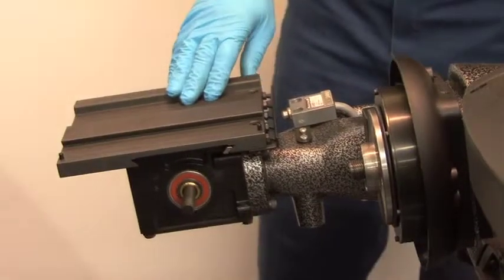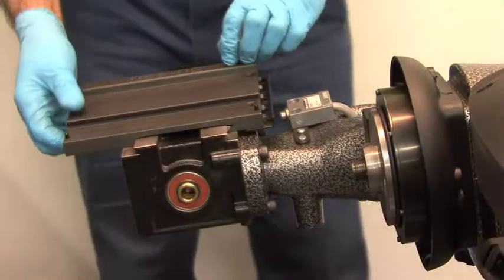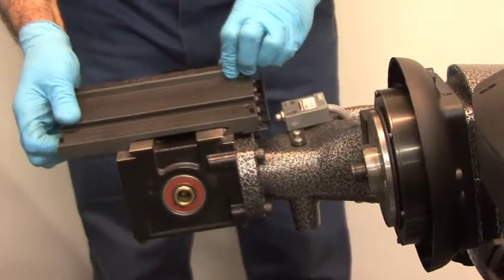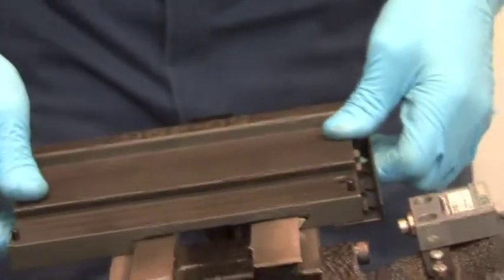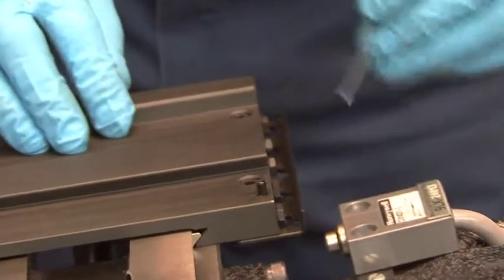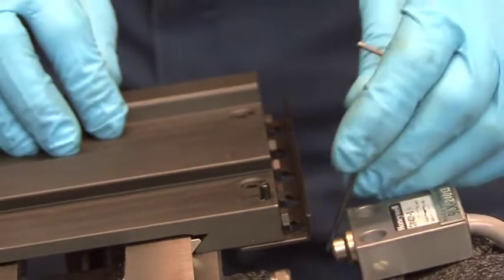Use the micro switch as a reference point. If there is movement, adjust the GIB screws close to the micro switch. Do this for the whole range of motion for the slide plate.